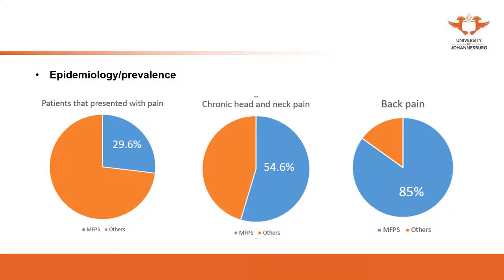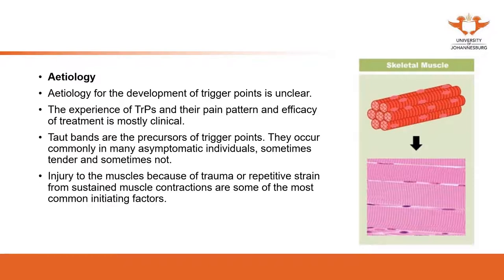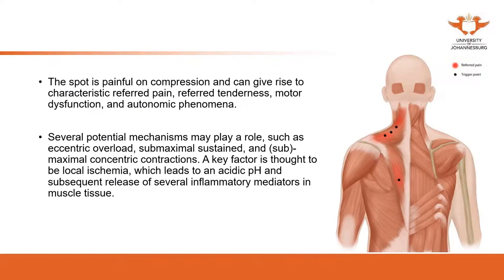Everyone at some point in their lives has experienced acute muscle pain associated with muscle spasm or repetitive strain. Myofascial pain syndrome is also very prevalent in our daily practice, especially in acupuncture practice, because we see a lot of patients presenting with different kinds of pain. 99.6% of patients present with Bi pain. Almost 30% of patients have myofascial pain syndrome. Chronic head and neck pain — more than half of them have been diagnosed as myofascial pain syndrome.